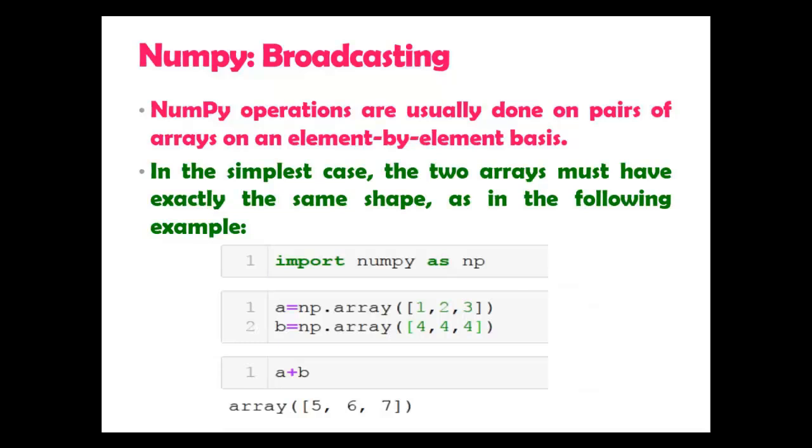Now here you can see NumPy normal operations. In NumPy, operations are usually done on pairs of arrays on an element by element basis. In the simplest case, the two arrays must have exactly the same shape. As in the following example, you can see I have created array A and B. Both are 1D arrays. So if you add A plus B, it will perform element by element basis. 4 plus 1 is 5, 4 plus 2 is 6, 4 plus 3 is 7.